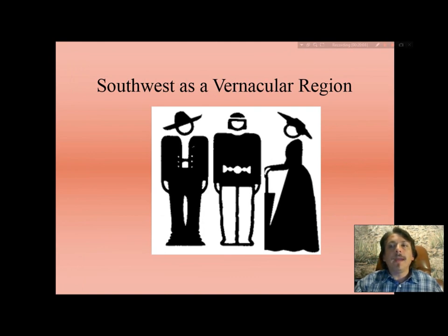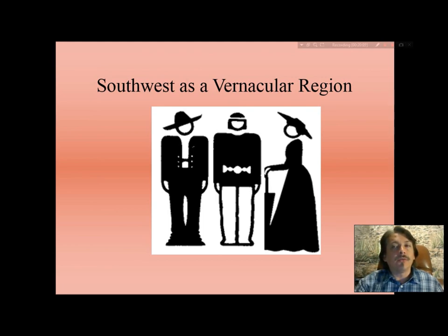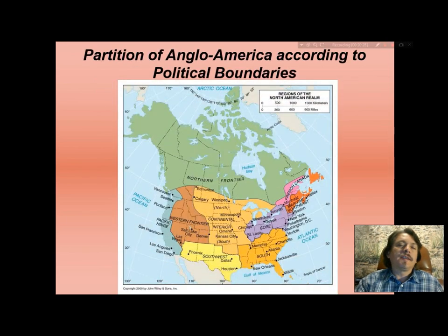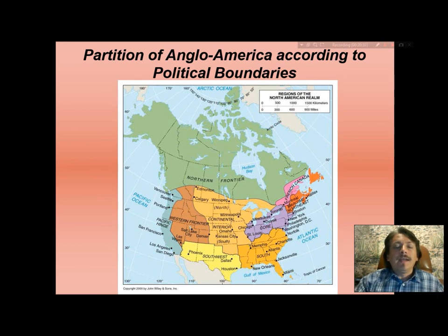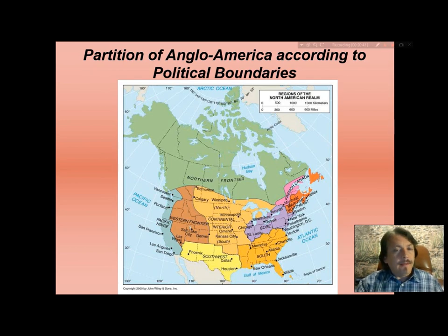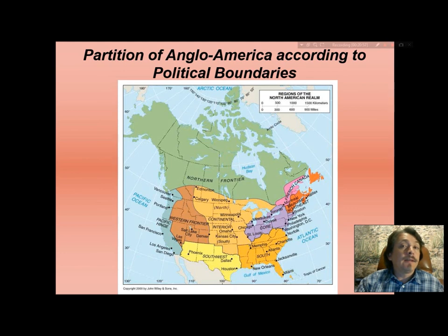Now let us move on to the main feature of our presentation: how we might define the U.S. Southwest as a vernacular region. We address Anglo-America — that part of North America that is English-speaking: the United States and Canada, essentially anything north of the U.S.–Mexican border. We'll look at Anglo-American partition according to political boundaries of states and between the two sovereign nations.